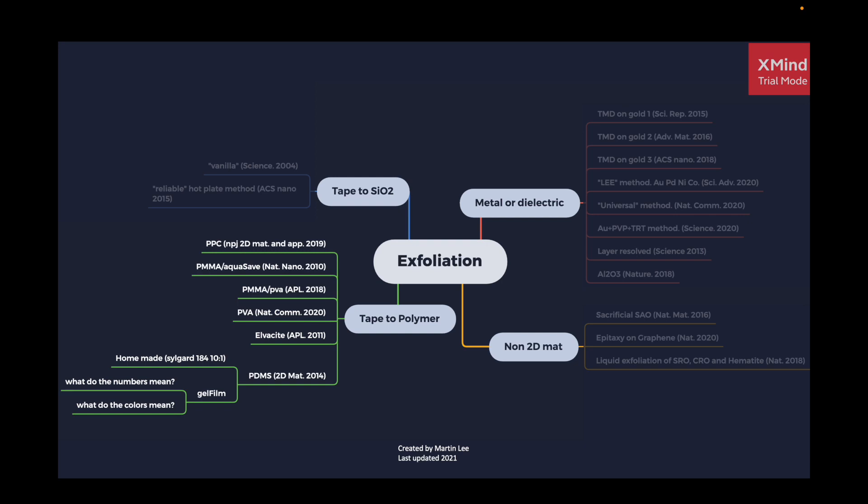The next series of techniques is an adaptation of the tape to silicon dioxide methods. Instead of exfoliating to something rigid like silicon dioxide, these methods are based on exfoliation onto polymer coatings, which are relatively softer in comparison. Thanks to the compressibility of polymers, the flakes tend to stay on the polymer coatings better than silicon dioxide.